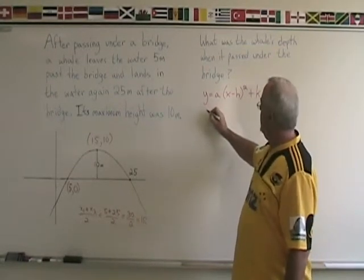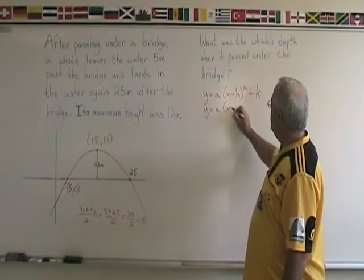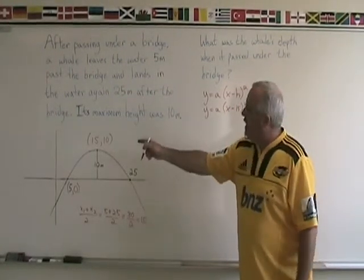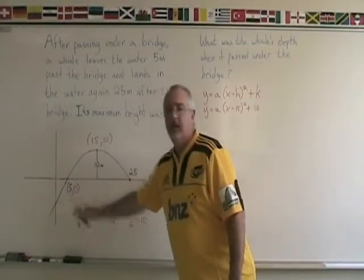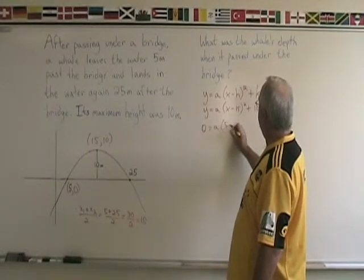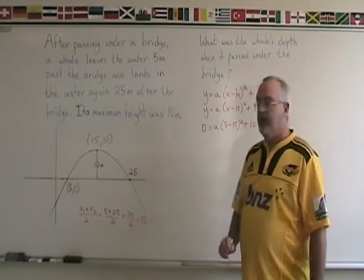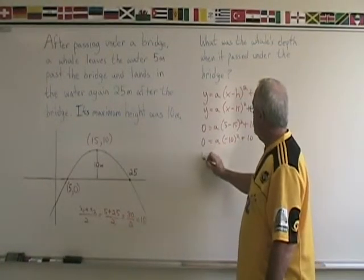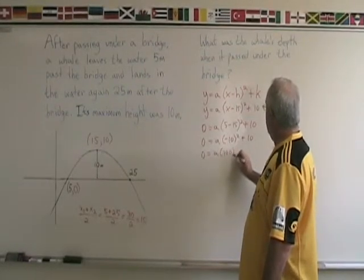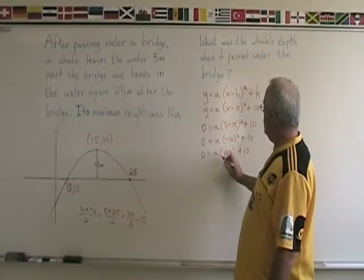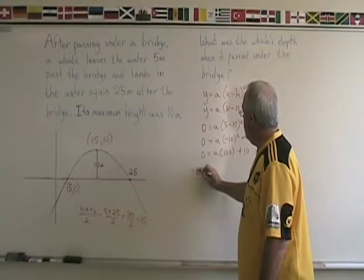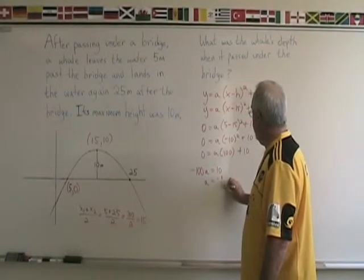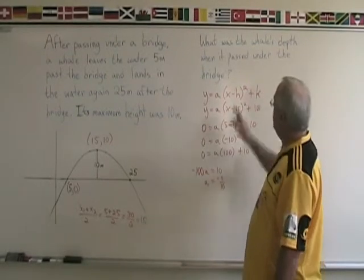We fill in the vertex form of the equation with h equals 15 and k equals 10: y equals a times (x minus 15) squared plus 10. We replace y and x with the coordinates of the other point, (5, 0): 0 equals a times (5 minus 15) squared plus 10. Simplifying: 0 equals a times negative 10 squared plus 10. Negative 10 squared is positive 100, so we have 0 equals 100a plus 10. Moving 100a to the left: negative 100a equals 10, so a equals negative 1 tenth.